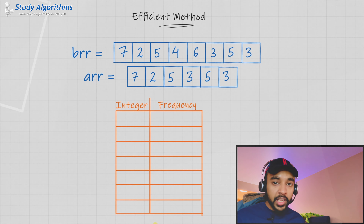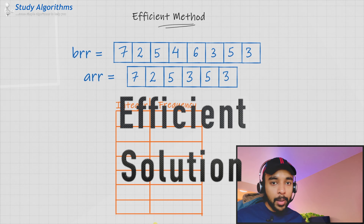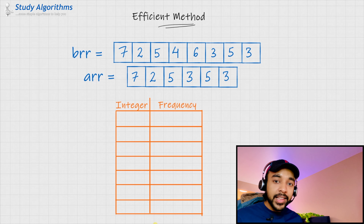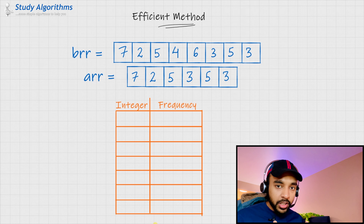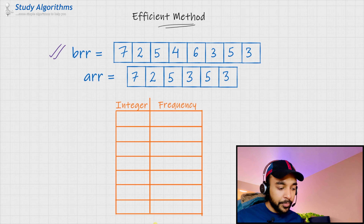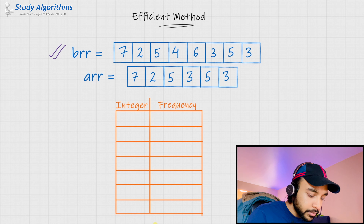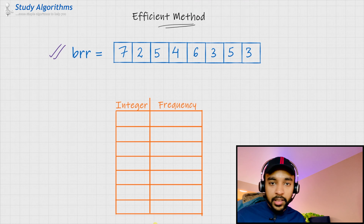To solve this problem in an efficient manner, we would be taking the help of a map structure. In this map, we would be mapping an integer and its frequency. For the beginning, let us take up only our original array, that is brr, and try to add all of these elements to our map. Ignoring array number 2 for the time being, let us traverse the array brr one by one.